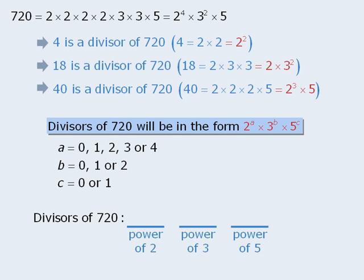Beginning with the first stage. The power of 2 can be 0, 1, 2, 3, or 4, so there are 5 ways to accomplish this stage.